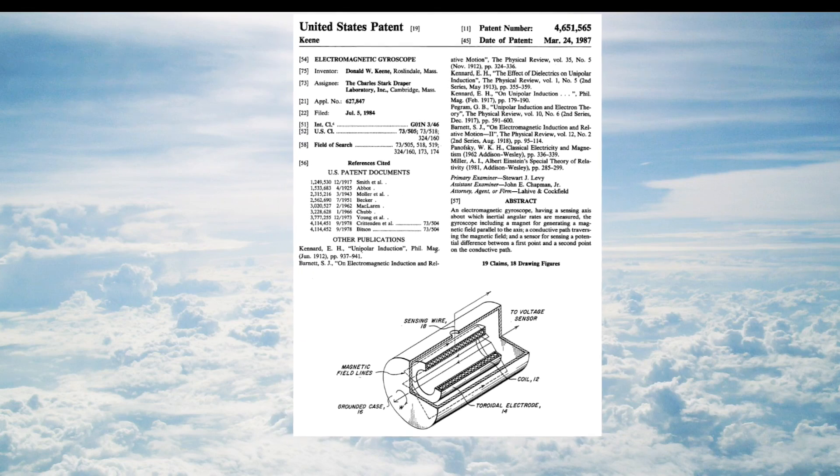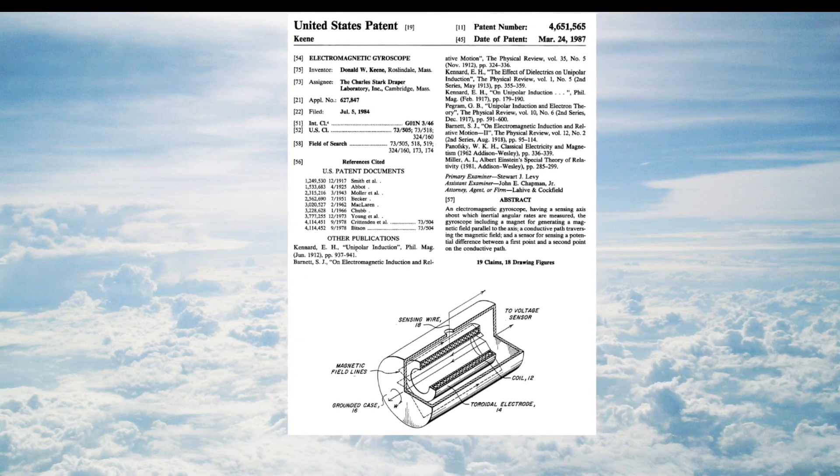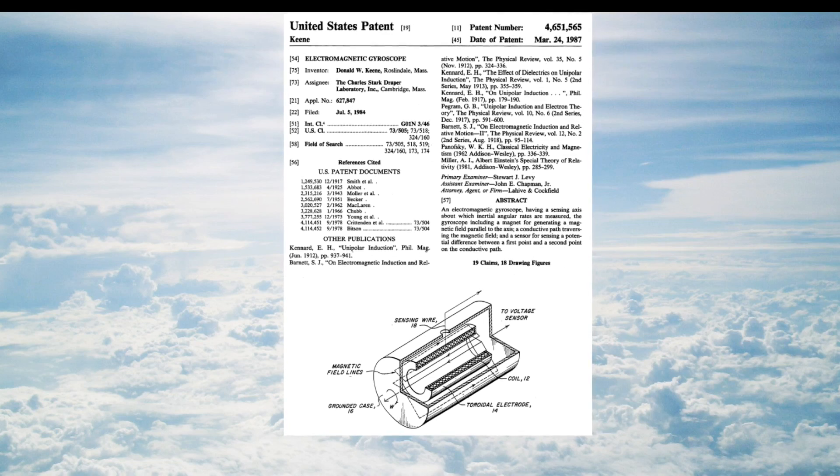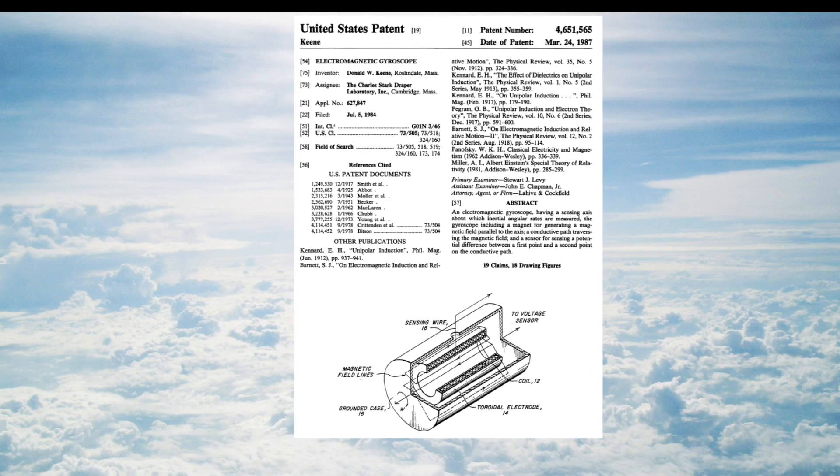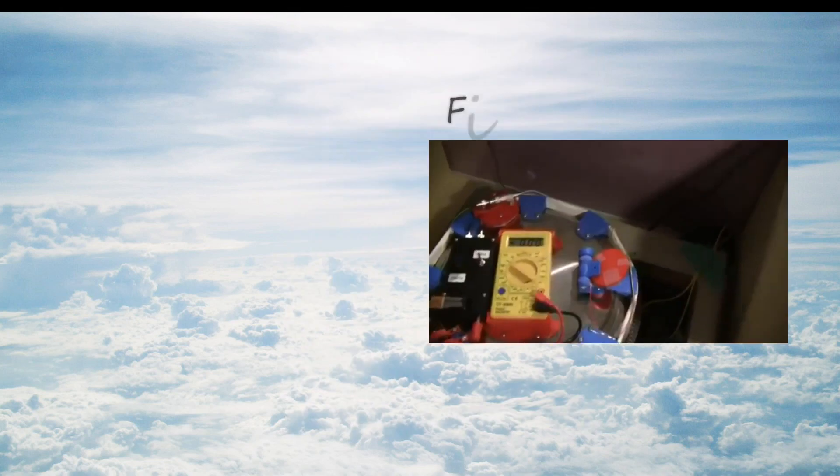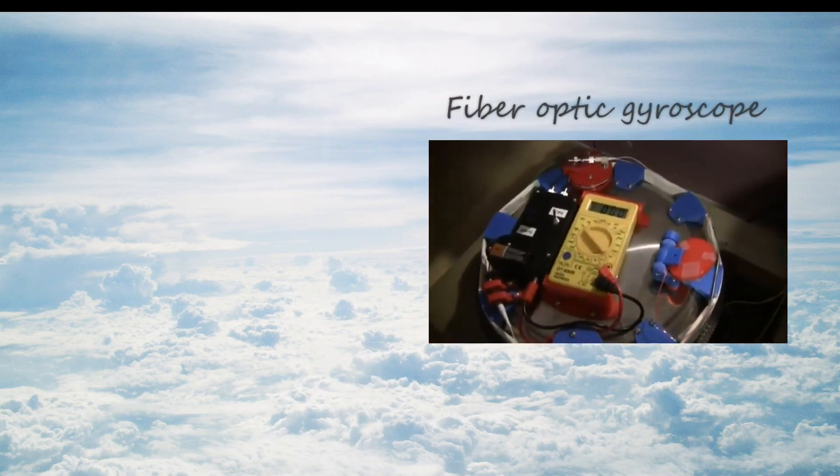The Keene patent took Kennard's generator to the next logical level, detecting rotation with respect to absolute space for the purpose of inertial navigation. This is because the Kennard device resembles in principle the fiber optic gyroscope.